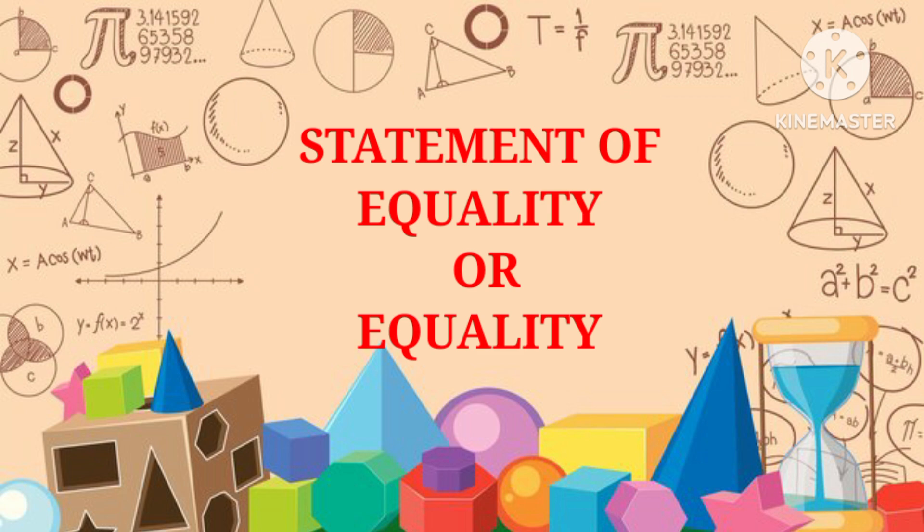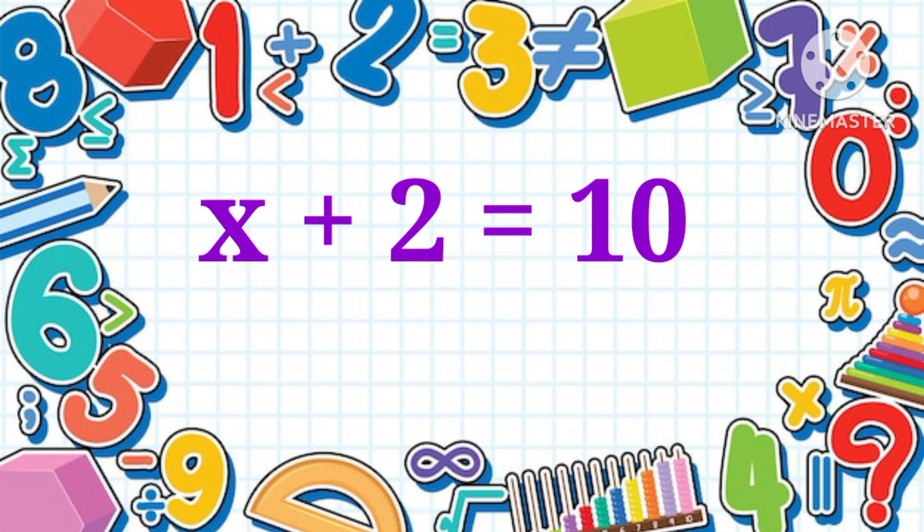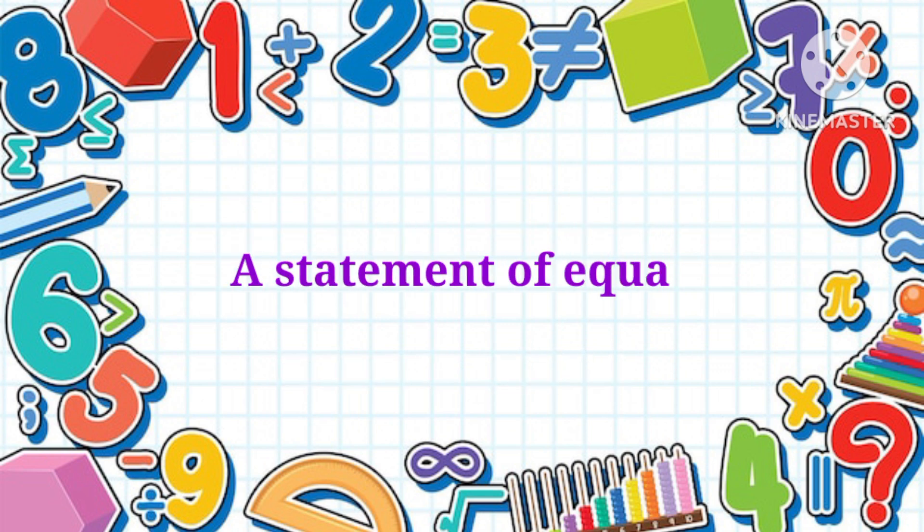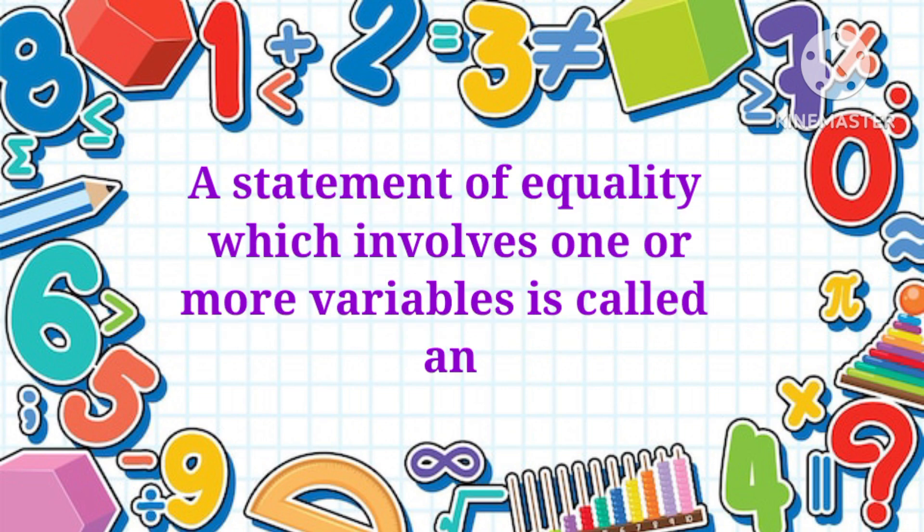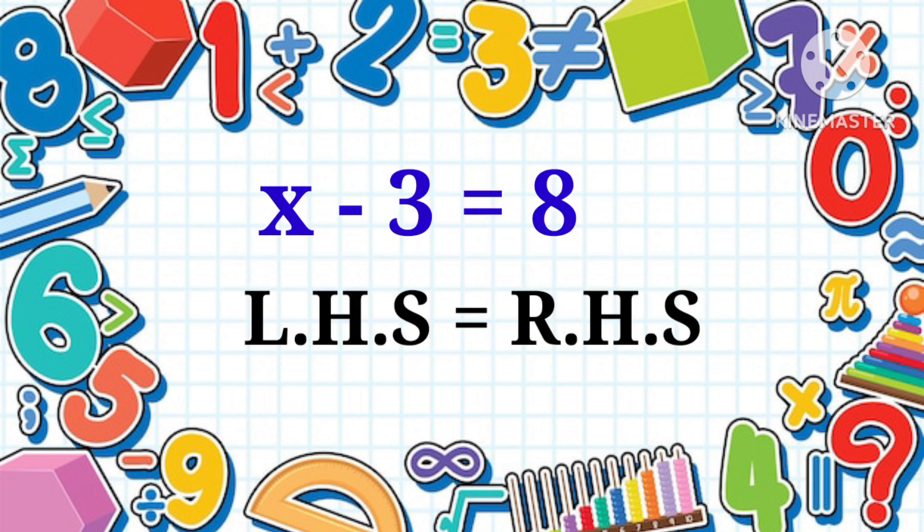Now let's see another expression: X plus 2 equals 10. Here the value of X will be any number, so X is a variable. A statement of equality which involves one or more variables is called an equation. In every equation there should be two sides, left hand side and right hand side, and they both should be equal.